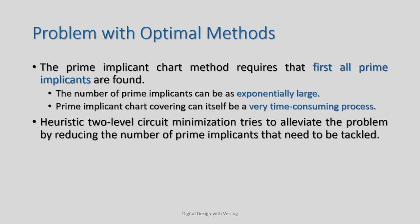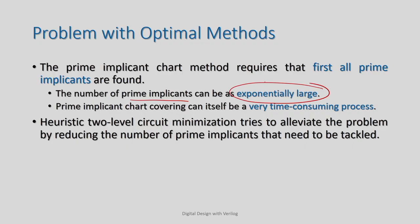The problem with optimal methods like Quine-McCluskey and Karnaugh map is that they first find out all the prime implicants. In Quine-McCluskey, we put them in a table and try to club them together to create bigger cubes, generating all prime implicants. Then from these prime implicants, we try to select a subset using the prime implicant chart, so that we can cover all the ones, or the minterms.